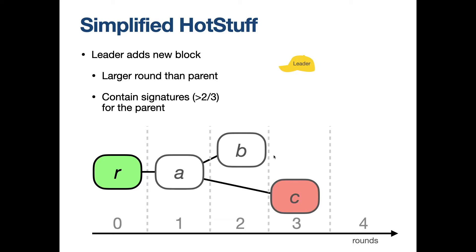So how does a leader add a new block? A new block must have a round larger than its parent and must contain signatures or votes for the parent for more than two-thirds of the processes. Typically, a leader will try to extend the block in the highest round. In this figure, that is block C. Here we see that the leader added a new block D in round 4 with 3 signatures for block C.